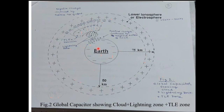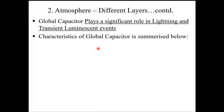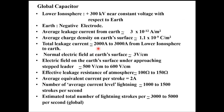This global capacitor plays an extremely significant role in lightning and transient luminous events. The characteristics of the global capacitor: the lower ionosphere is at nearly 250 to 300 kV, nearly constant with respect to Earth. Earth is the negative electrode. The average leakage current is about 3 picoamperes per square meter.